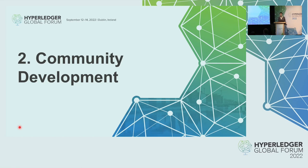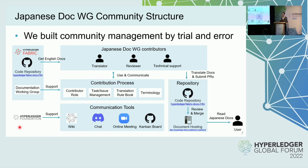The next topic is community development. This graph shows the overview of the Japanese documentation working group. Contributors pick up an English document, translate it into Japanese, the document is reviewed and released. Contributors follow the contribution process using communication tools supported by the Fabric Documentation Working Group. This is the latest version — when we started, there was no concrete process, so we faced many problems and built our community management by trial and error.